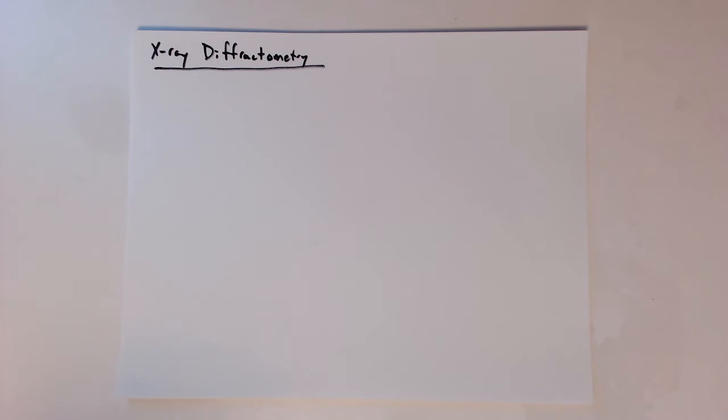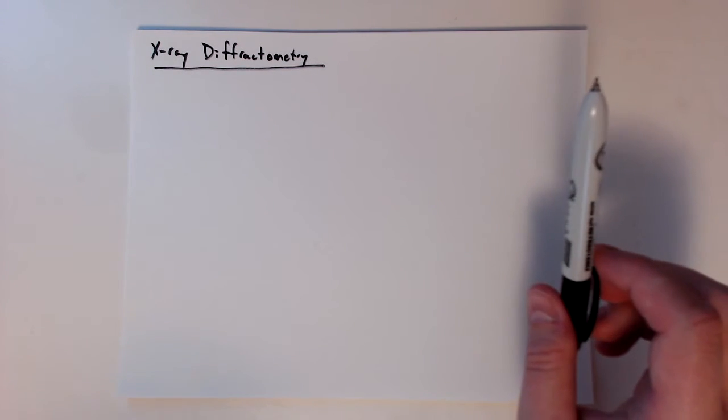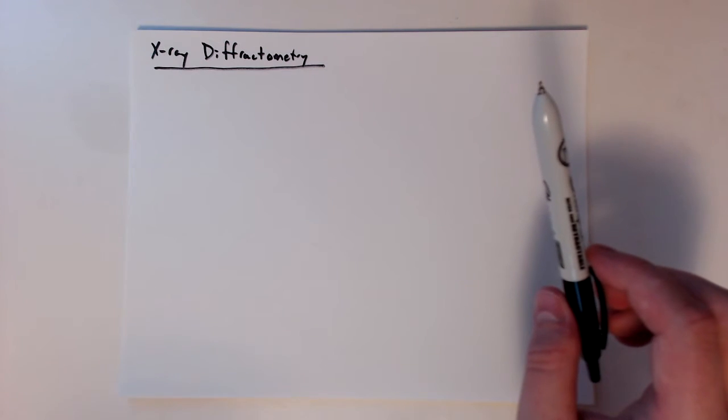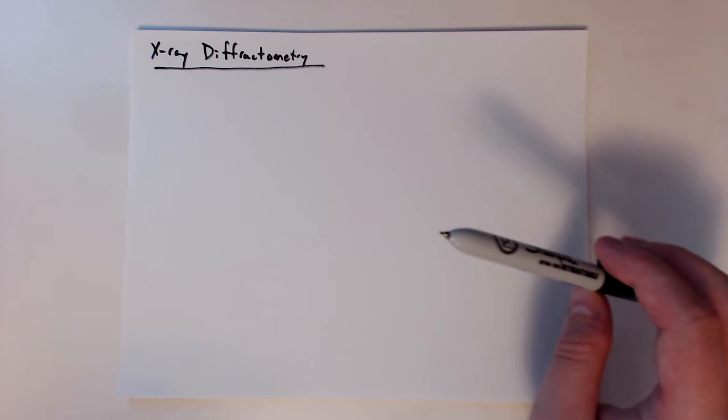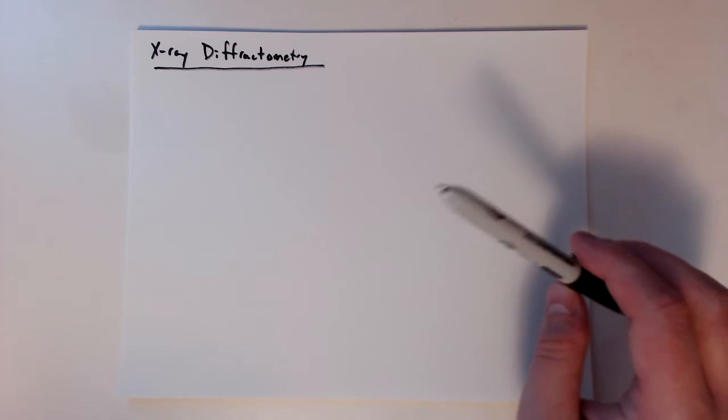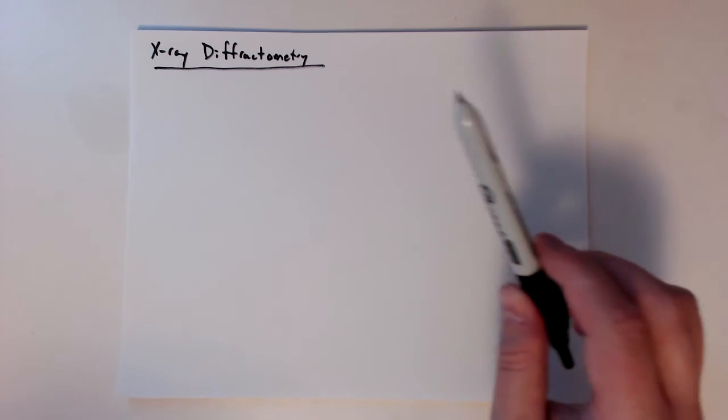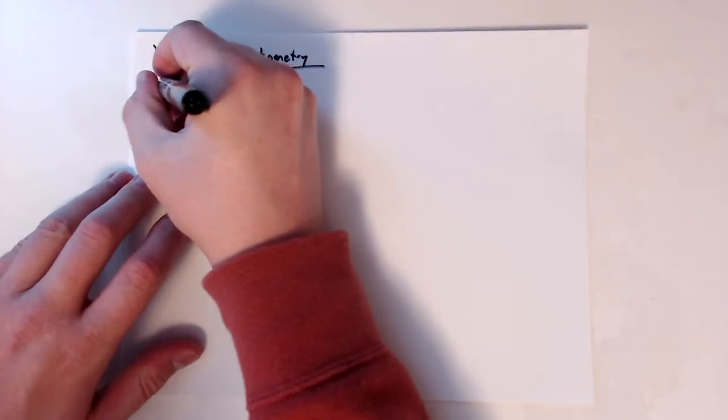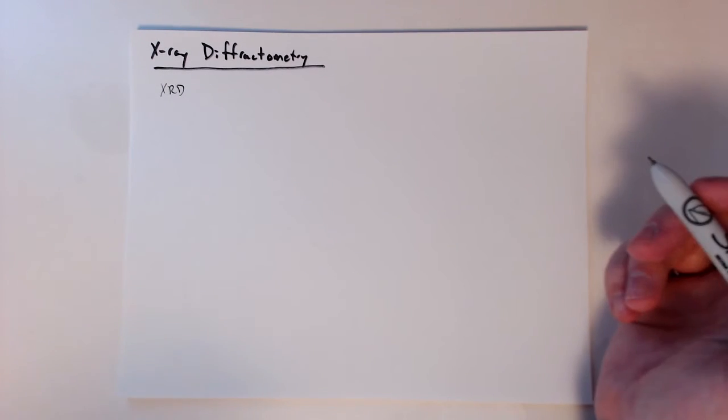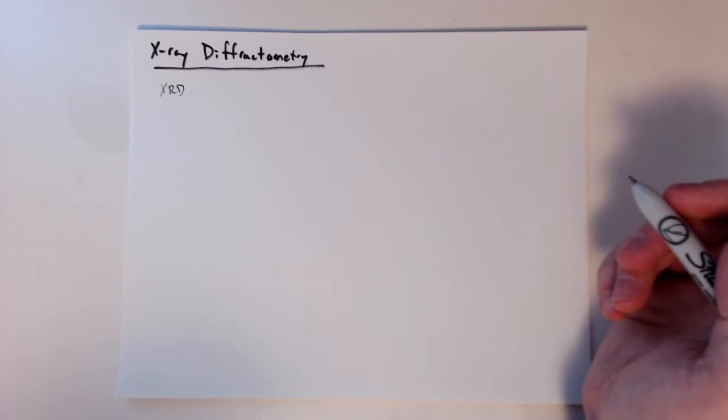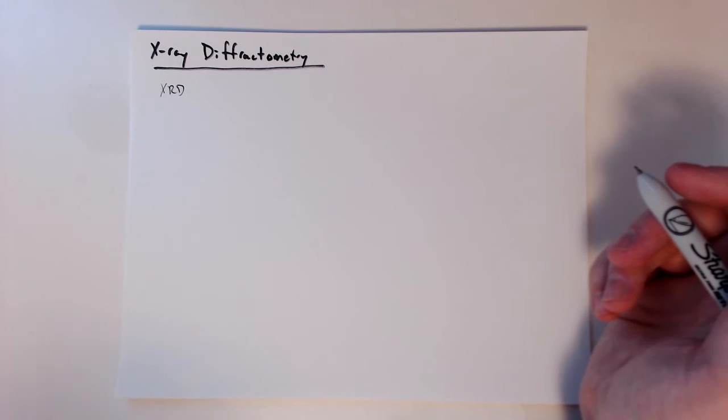In this module, we're going to talk about what we call x-ray diffractometry. So we've been talking a lot about the act of diffraction and so forth, but today we want to basically move into the instrumentation and how it's actually done. So x-ray diffractometry, or XRD, as we've been calling it, is the most widely used type of x-ray diffraction technique. There are multiple techniques, but this is the one that we typically do.